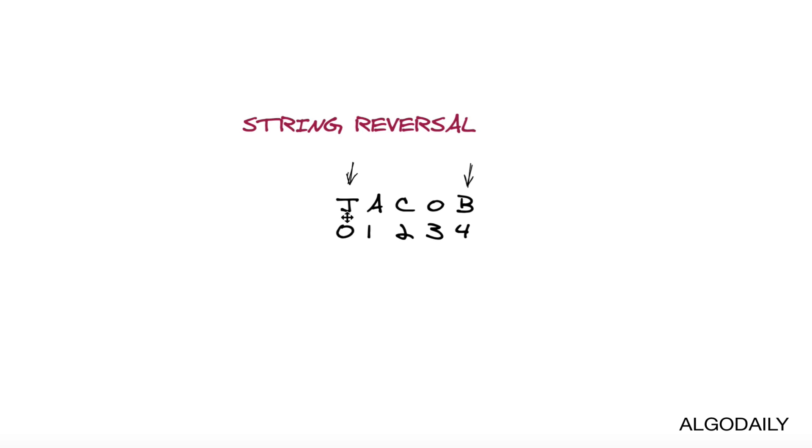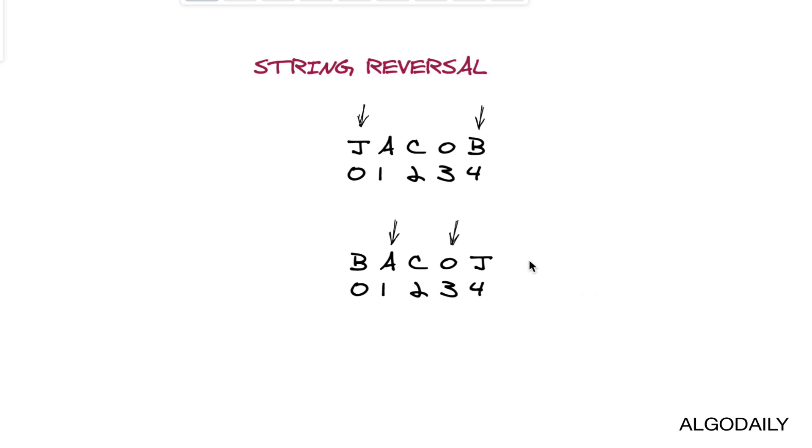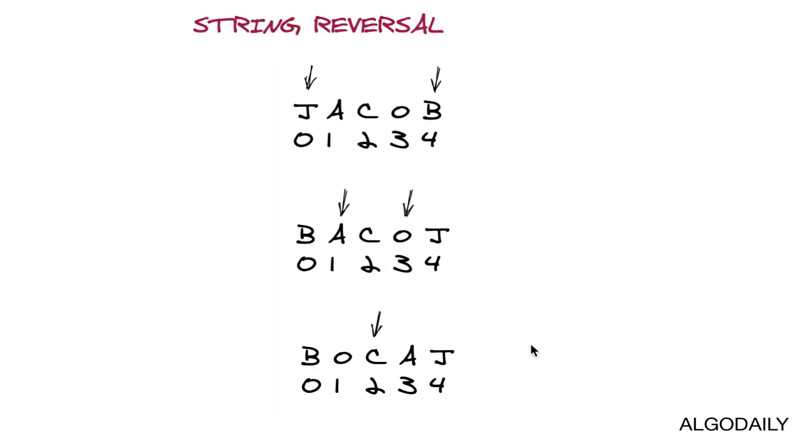What we could do is actually do a swap each time. Here, we see J and B being pointed at. Then we flip, we swap them, and move the pointers in one more time. At this point, we'll move the pointers inwards and swap those guys. Then we end up with our lone C in the middle, which we don't have to swap, and we get our reverse string.